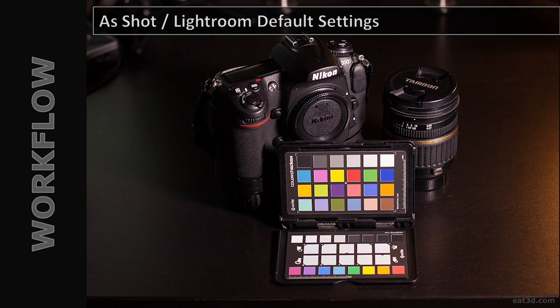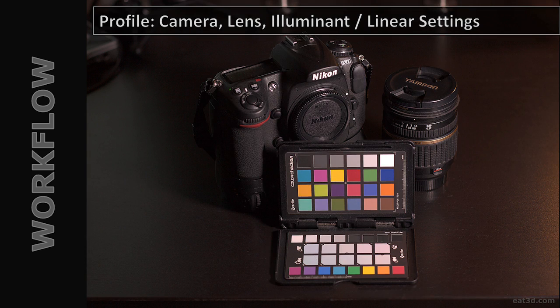To better understand the correction process, let's take a look at the correction layers. Here's an image I brought straight into Lightroom as-is — it's not bad, but there's room for improvement. The first layer of correction is assigning a camera profile, which corrects the camera and lens's ability to render accurate colors under a given illuminant. This particular camera with this particular lens will achieve certain color characteristics under tungsten, daylight, and overcast lighting, and we use camera profiles to get those colors correct.